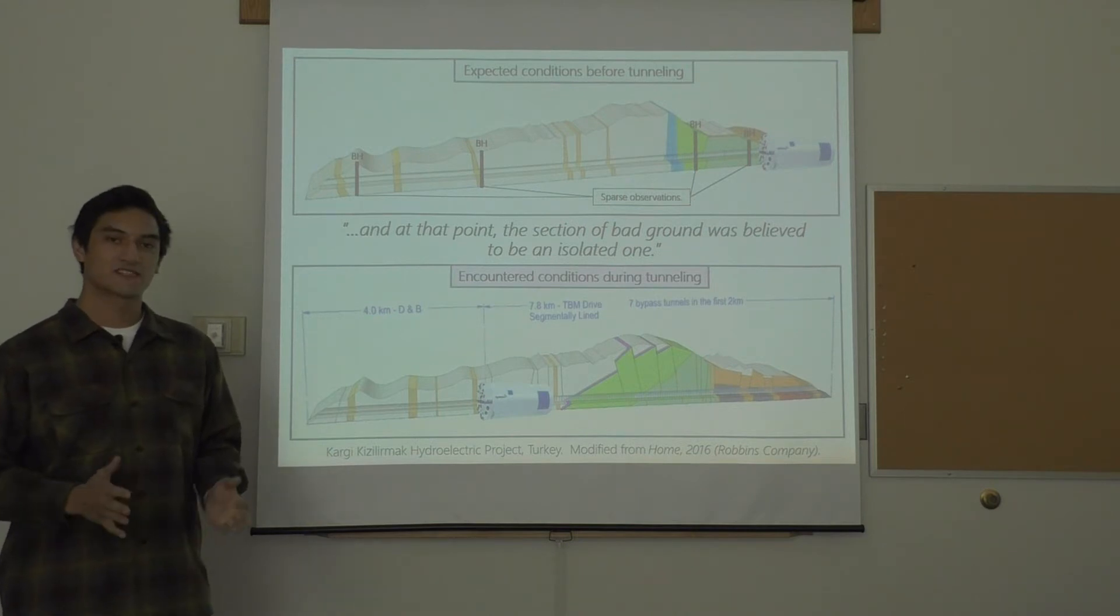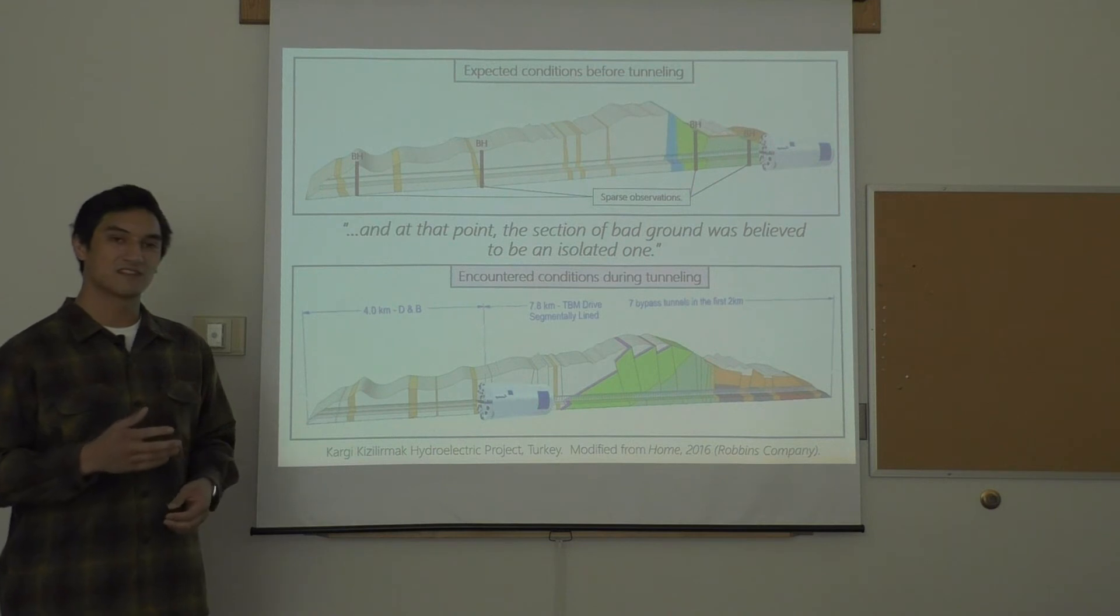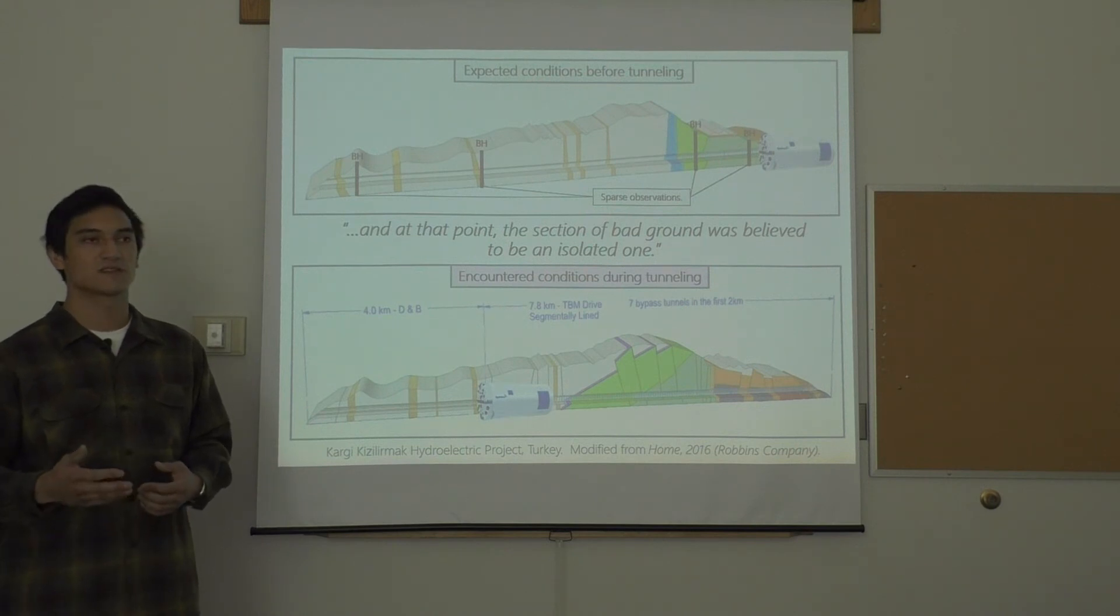Upon encountering the first set of unexpected ground conditions, the site engineers made the assumption that the problematic ground was isolated and that tunneling could continue as planned. Had the additional information from encountering the first occurrence of unexpected ground conditions been utilized to update our geologic understanding for the rest of the tunnel alignment, it is possible that the subsequent occurrences could have been predicted and their effects mitigated.